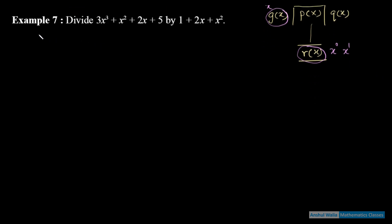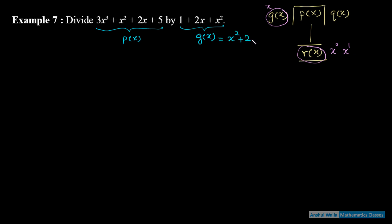अब question में: यह सारा मेरा p(x) हो गया और यह सारा मेरा g(x) हो गया, इससे divide करना है। सबसे पहले ध्यान रखेंगे कि सब कुछ order में होना चाहिए — degree के order में। यहाँ उल्टा है तो rearrange कर लेंगे: x² + 2x + 1 बन गया।